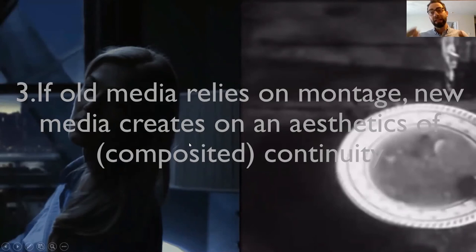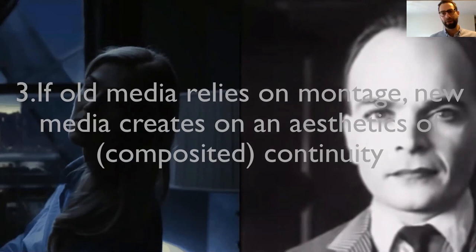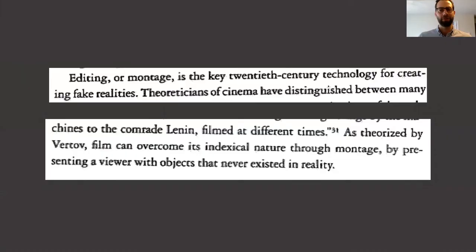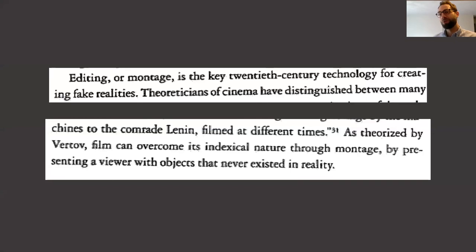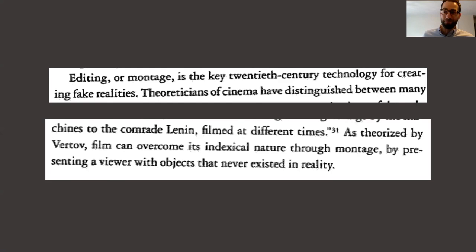Eisenstein will highlight this — he really likes the idea that you can see the seams, that you can feel their impacts. That's what Eisensteinian montage is all about. Manovich says: editing or montage is the key 20th century technology for creating fake realities. It's not just about creating meaning — it's also about creating fake reality. He draws attention to the way we think about the digital as fake, creating fake worlds like in Gravity, where they weren't actually in space. But he'll say the fake thing was also a huge part of montage. As theorized by Vertov, film can overcome its indexical nature through montage by presenting the viewer with objects that never existed in reality.